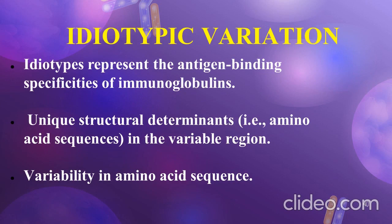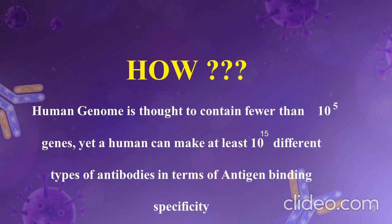Each antibody has only one type of heavy chain and one type of light chain. The structural differences in the constant region of a heavy chain or light chain determine immunoglobulin classes, subclasses, types, and subtypes within a species. These constant region determinants are called isotypic determinants or isotypes. All members of a species carry the same constant regions, so when an antibody from one species is injected into another species, the isotypic determinants are recognized as foreign antigen, forming an anti-isotype antibody.